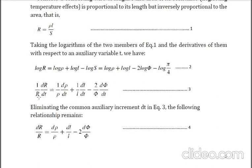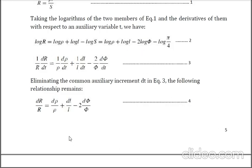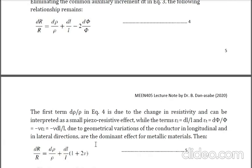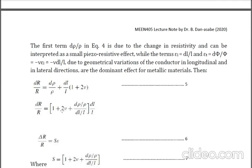In equation two, we have a constant term which can be removed, giving us equation number four. Equation four represents: change in resistance over resistance equals change in resistivity over resistivity, plus change in length over L — representing longitudinal strain — minus two times change in diameter over diameter, representing transverse strain. We can obtain equation number five by substituting Poisson's ratio into equation four. Poisson's ratio equals the negative of transverse strain over longitudinal strain. From equation five, we can factorize.